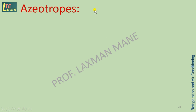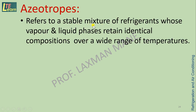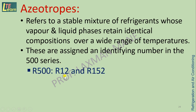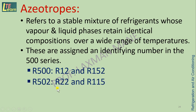The next type of primary refrigerant under halocarbons is azeotropes. Azeotropes refer to a stable mixture of refrigerants whose vapor and liquid phases retain identical compositions over a wide range of temperatures. These are assigned an identifying number in the 500 series. For example, R500 is a mixture of two refrigerants: R12 and R152. Similarly, there are other refrigerants in the 500 series.